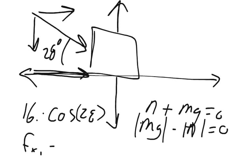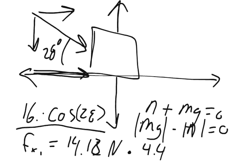Or 16 times cosine 28 degrees. And so we can get the f of x here. The force on the x-axis, we'll call it f of x1. Even though that's the only one, we'll still label it with a 1. f of x1 equals 14.12. We'll just call it 14.13 newtons. And so we're going to multiply that by the distance, which is 4.4.